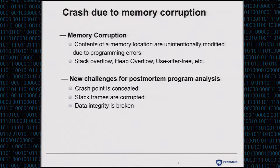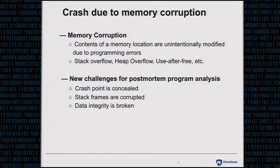I would like to introduce the concept of memory corruption briefly. By definition, memory corruption means contents of a memory location are unintentionally modified due to programming errors. Common types include stack overflow, heap overflow, and use-after-free. Memory corruption introduces new challenges for post-mortem analysis: corruption could corrupt the control flow and conceal the actual crash point, so we have no starting point. The corruption may also pollute data on the stack, so stack frames may have been corrupted. And the data maintained in the core dump may also have been broken, making backtrace approaches unreliable.